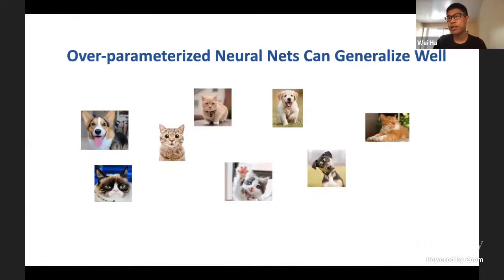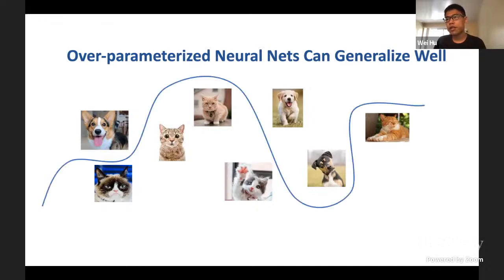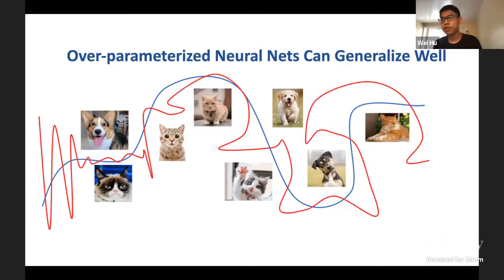Let me use a simple example to illustrate this. Let's say that this is our training dataset with images of cats and dogs. When we train a neural net to classify these datasets, the neural net could learn this blue boundary, for example. But because the model is usually highly over-parameterized, it is also capable of representing very complicated functions, for example, this red boundary, which looks very different from the blue one. But these two solutions perform equally well on the training dataset. They both have zero training error, but they may perform very differently on new test samples because these two are very different functions.